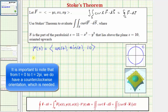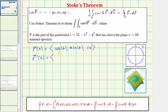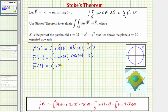We also need r prime of t. The components of r prime of t are the derivatives of the components of r of t: the derivative of cosine t is negative sine t, the derivative of sine t is cosine t, and the derivative of 10 is zero. We also need to write the vector field f in terms of t. With x equals cosine t, y equals sine t, and z equals 10: the x component, which is negative yz, is negative 10 sine t; the y component, which is xz, is 10 cosine t; and the z component, which is xy, is cosine t sine t.